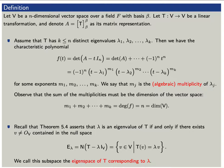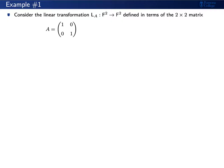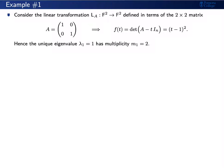Let's discuss a few examples. Consider the linear transformation L sub A given by the 2x2 matrix with entries 1, 0, 0, 1. We found before that its characteristic polynomial is (T minus 1) squared. Hence, by looking at the factorization, there is a unique eigenvalue lambda 1 equals 1 with multiplicity m sub 1 equals 2.